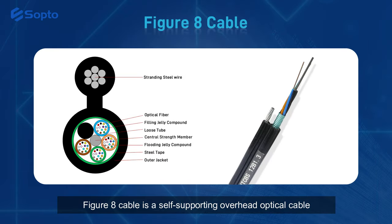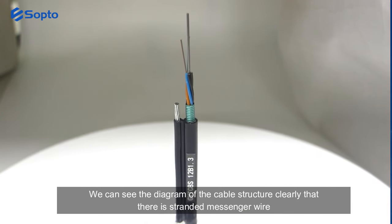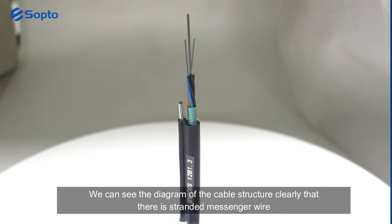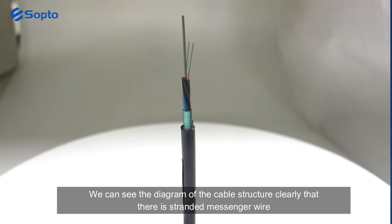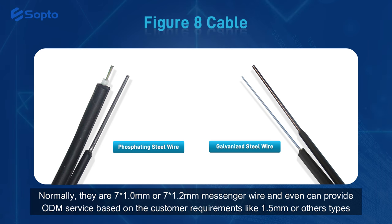Figure 8 cable is a self-supporting overhead optical cable. We can see the diagram of the cable structure clearly — there is stranded messenger wire. Normally they are 7×1.0 or 7×1.2 messenger wire, and we can even provide ODM service based on customer requirements, like 1.5mm or other types.